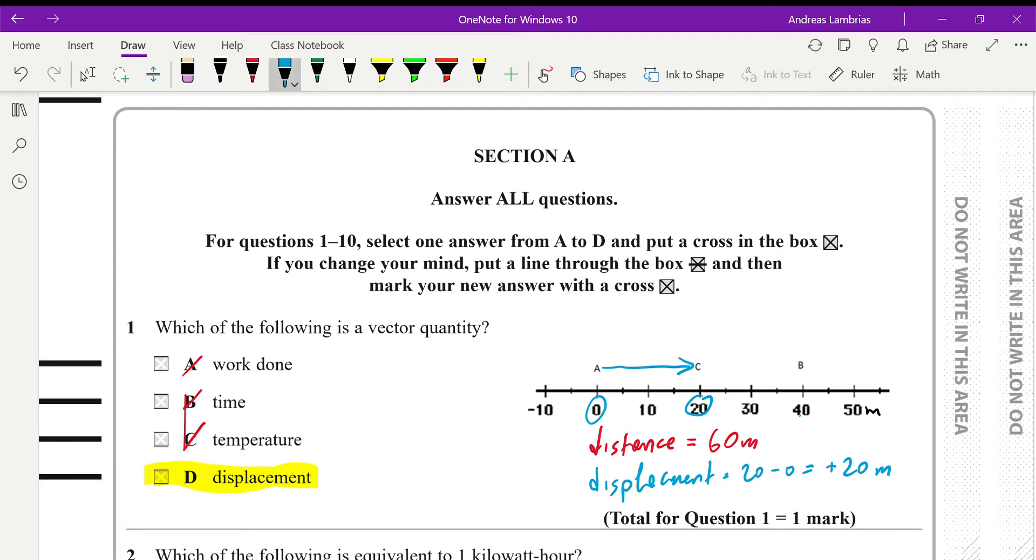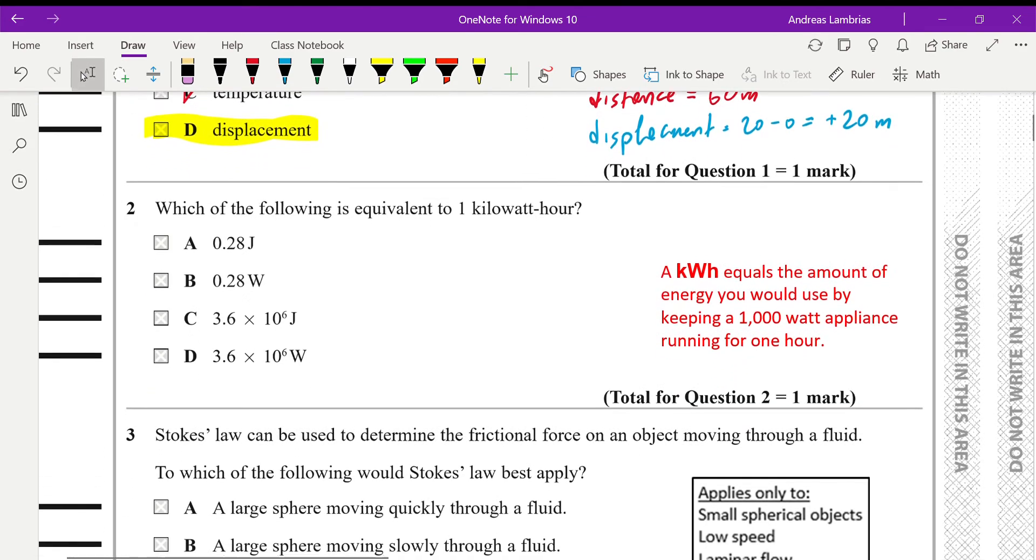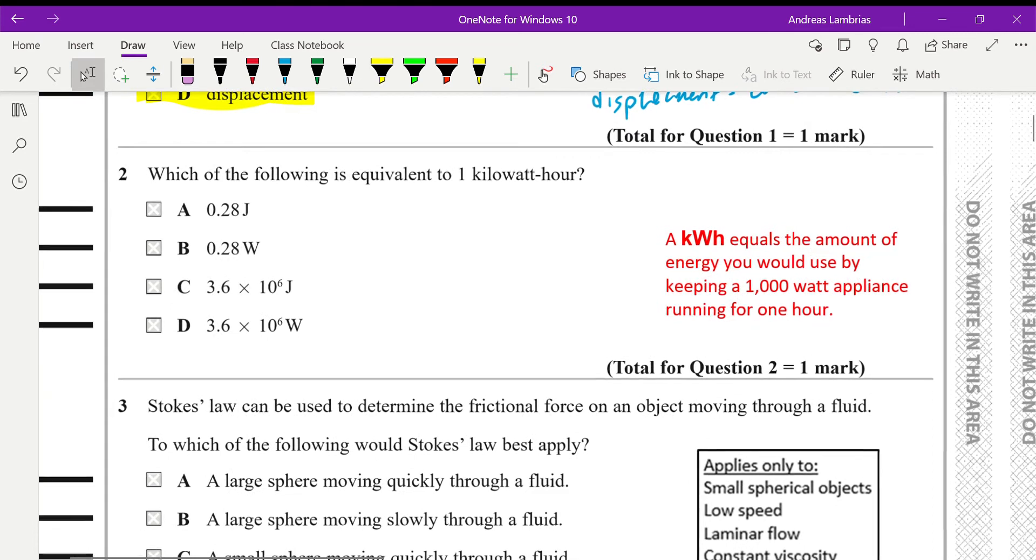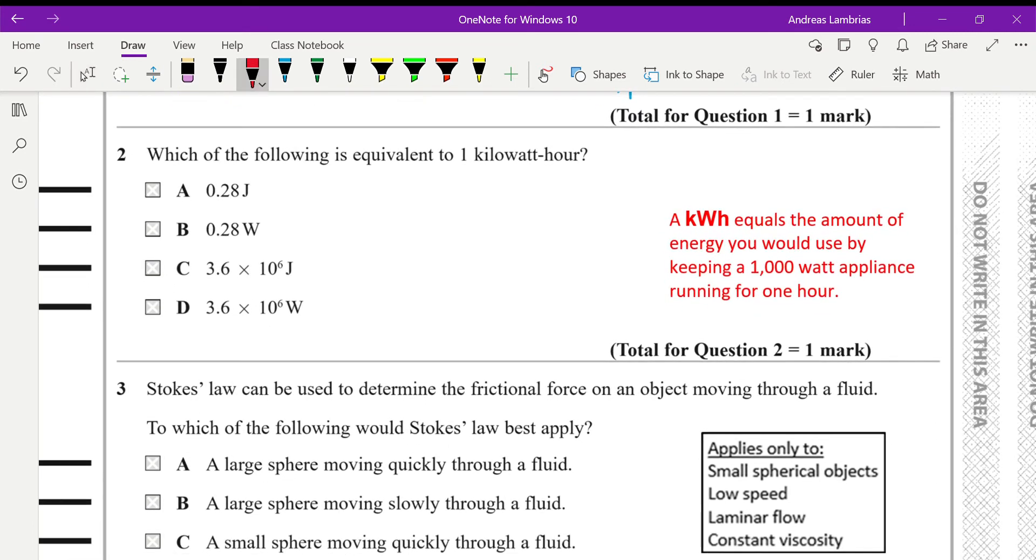Then question two: which of the following is equivalent to one kilowatt hour? Now if you look at this unit, kilowatt refers to power, hour refers to time. So what is given by power times time? This is of course the energy. Therefore one kilowatt hour is a unit for measuring energy. And I'm providing here a definition that a kilowatt hour equals the amount of energy you would use by keeping one kilowatt appliance running for one hour.